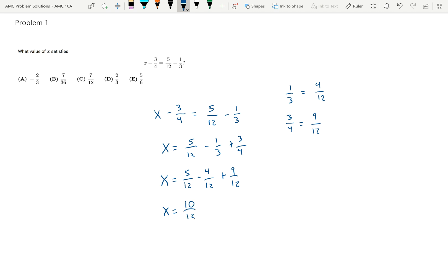I see 10 twelfths isn't an option up above, but 10 twelfths is equal to 5 sixths. So the answer is E, x is equal to 5 sixths.